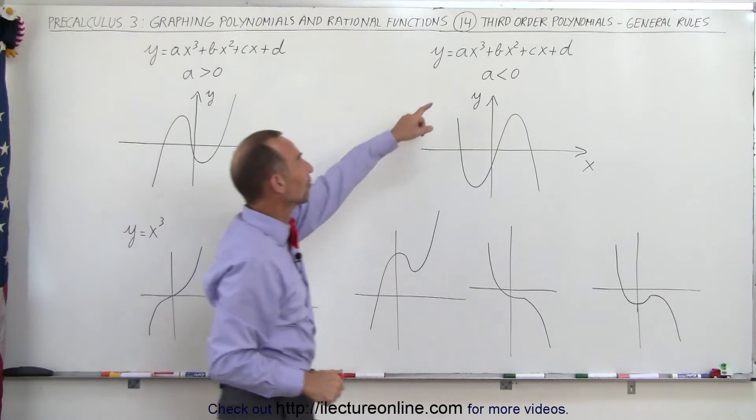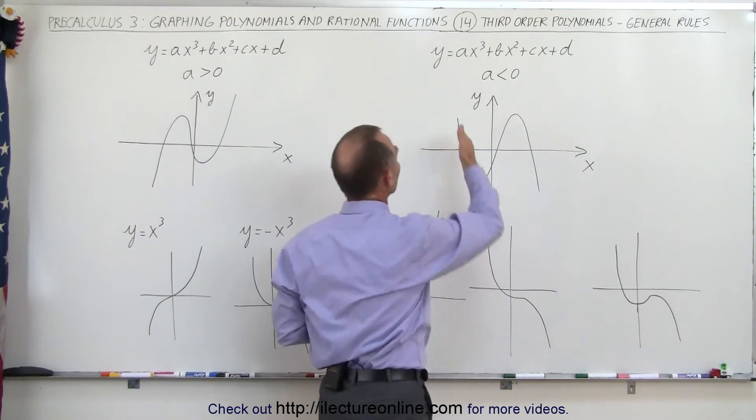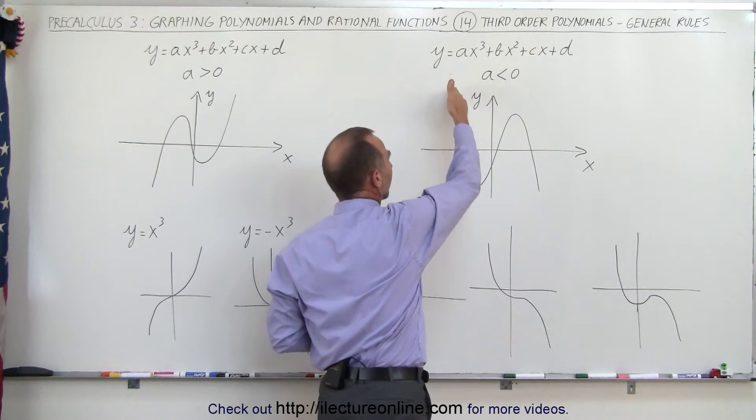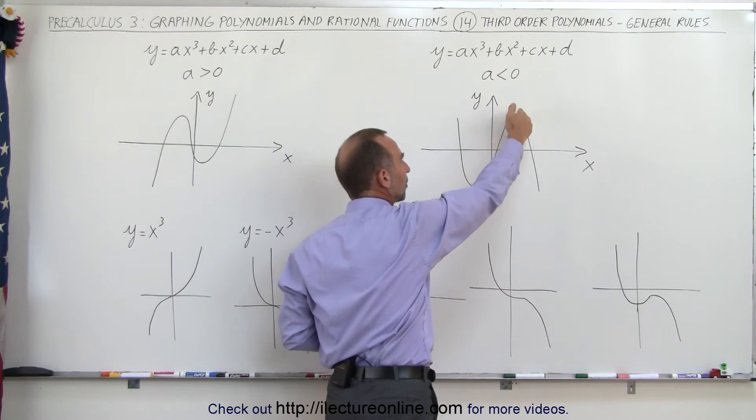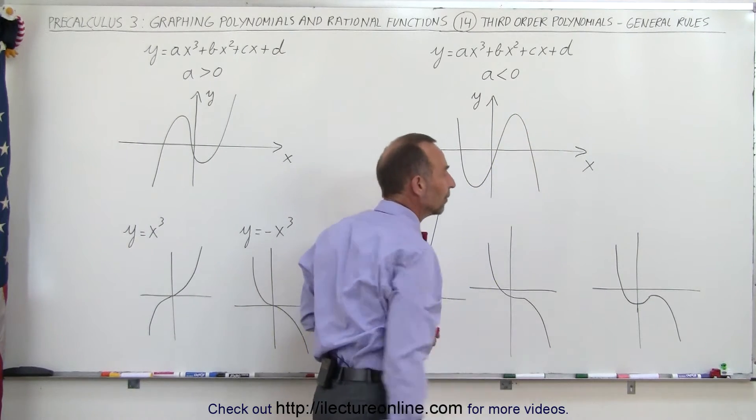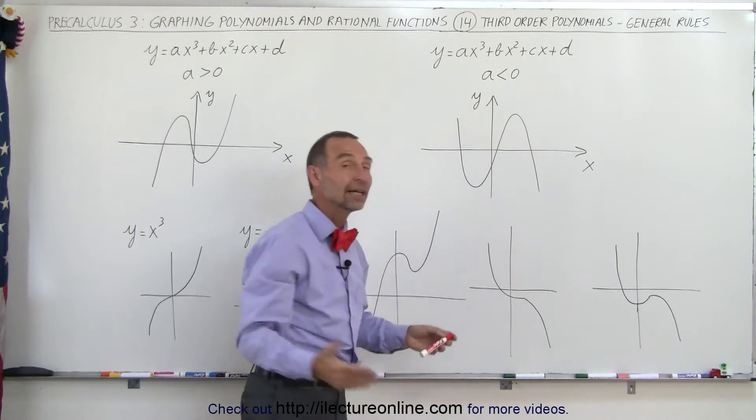Or in the case where the coefficient in front of the x cubed term is negative, less than zero, then it starts at the positive y direction, comes down, there's a local minimum, comes here, there's a local maximum, and then it goes on to a negative value that increases all the way down to negative infinity if you keep going.